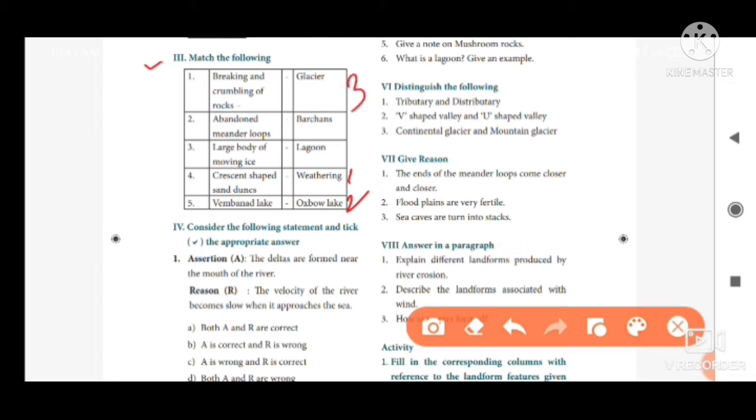Then fourth one, crescent shaped sand dunes. The answer is barchan. Fifth one, Vembanad lake. The answer is lagoon. These are the correct answers.